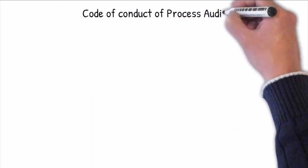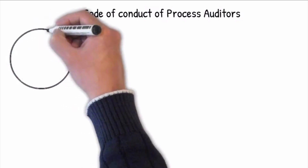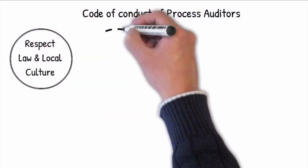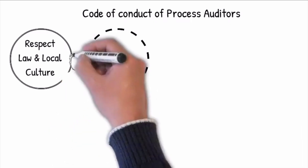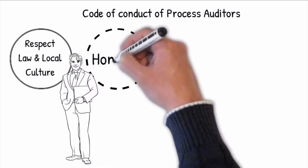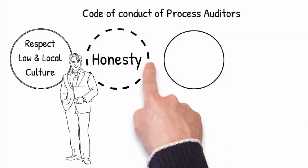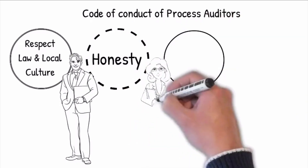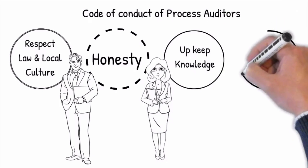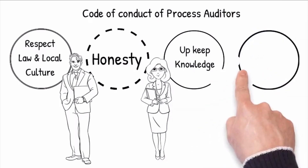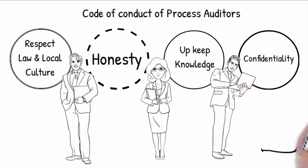It is important that auditors at all times have a professional code of conduct, by exercising their professional capabilities and judgment, taking account of the law and local culture, and maintaining the principles of honesty and integrity. They must also continue to develop their technical expertise, maintain knowledge of the latest developments, and undertake to maintain strict secrecy regarding confidential information, but this does not apply when the law is broken.